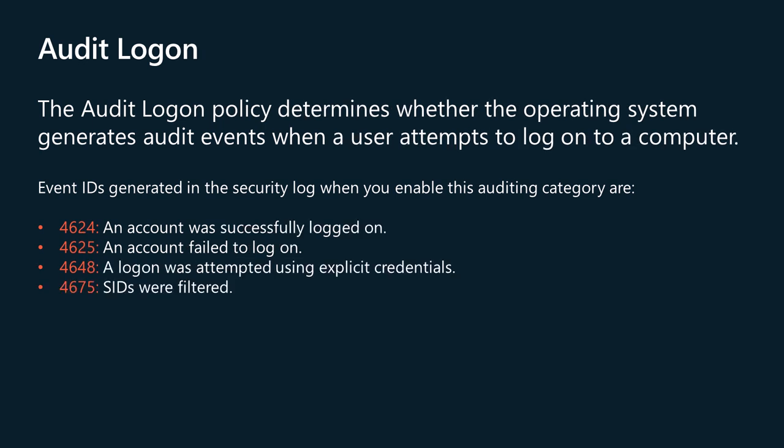The Audit Logon policy determines whether the operating system generates audit events when a user attempts to log onto a computer. These events are related to the creation of logon sessions and occur on the computer that was accessed. For an interactive logon, events are generated on the computer that was logged onto. For a network logon, such as accessing a share, events are generated on the computer that hosts the resource that was accessed. The following events are recorded: logon success and failure; logon attempts by using explicit credentials — this event is generated when a process attempts to log on an account by explicitly specifying that account's credentials, which most commonly occurs in batch configurations such as scheduled tasks or when using the RunAs command; and security identifiers (SIDs) are filtered. Logon events are essential to tracking user activity and detecting potential attacks. Event IDs generated in the security log when you enable this auditing category are displayed on the screen. More detail is available in the article linked below.